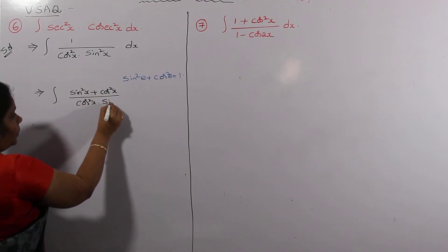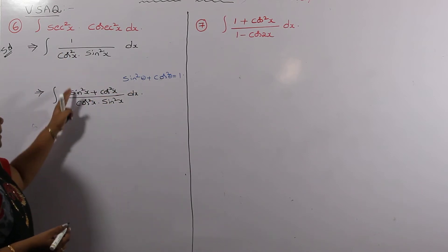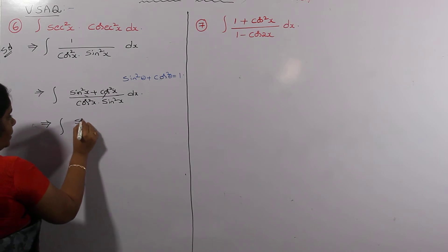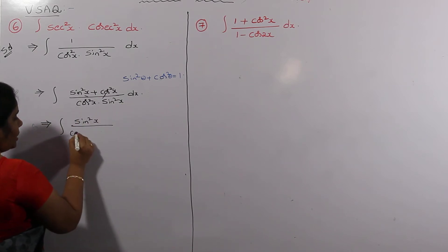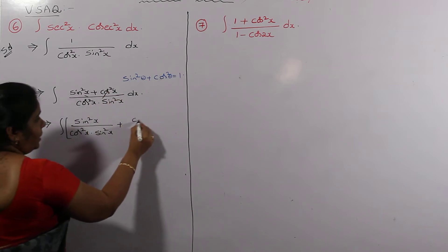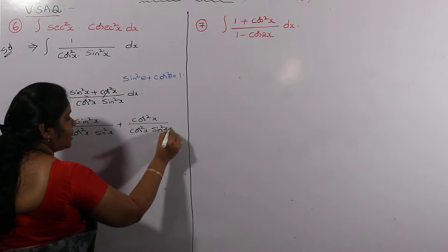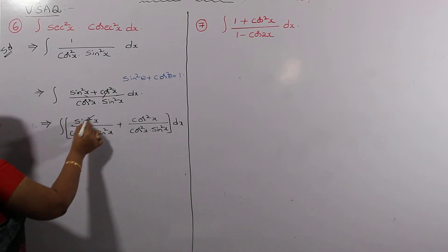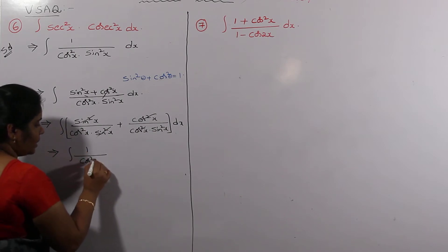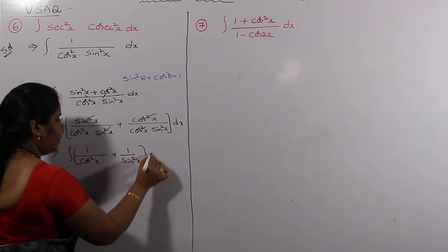So we have the integral of sin squared x plus cos squared x, divided by cos squared x times sin squared x, dx. Now splitting this fraction: sin squared x divided by cos squared x times sin squared x, plus cos squared x divided by cos squared x times sin squared x, simplifies to 1 over cos squared x plus 1 over sin squared x, whole dx.